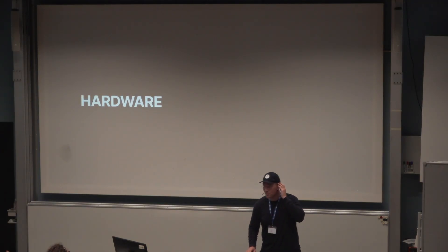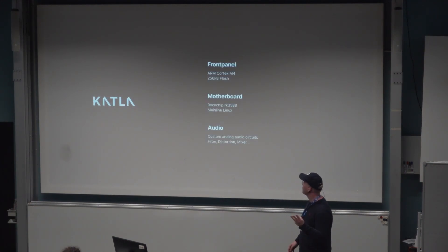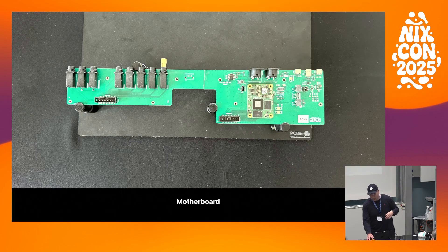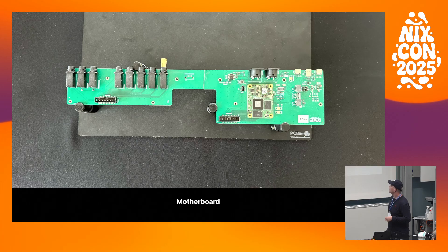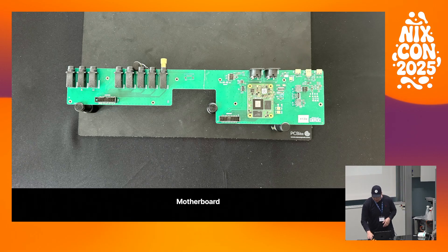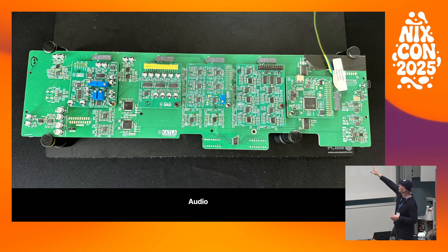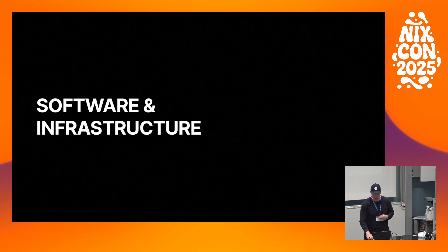Now I'm going to go really quick — I only have 14 minutes left. The hardware of Katla consists of three main parts: the front panel, which is an ARM Cortex-M4 controller that handles all the knobs and buttons; the motherboard, which is the brains of the operation with a Radxa CM5 chip — that's a Rockchip RK3588; and the audio section with a 32-channel high-speed audio codec outputting to 32 channels of DOCK, which controls the filter, wave filter, mixer, and distortion via CV through a very powerful CM4 chip.